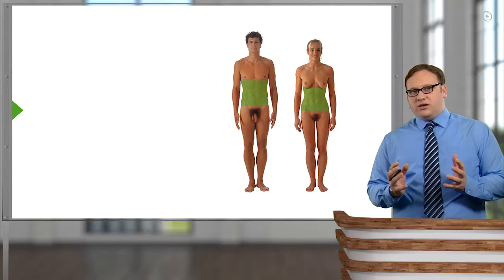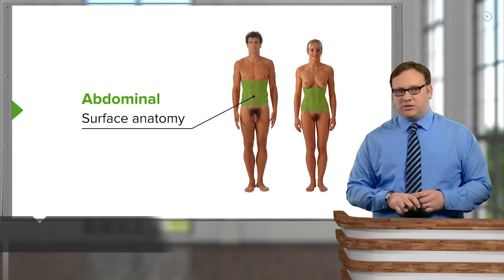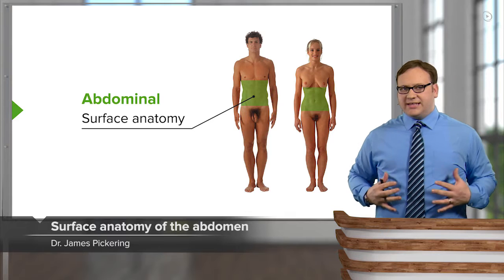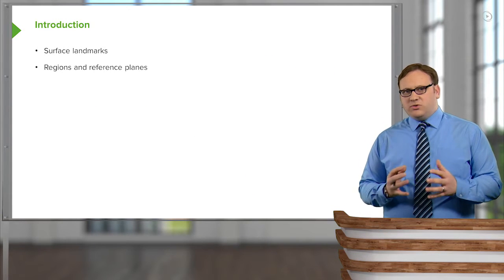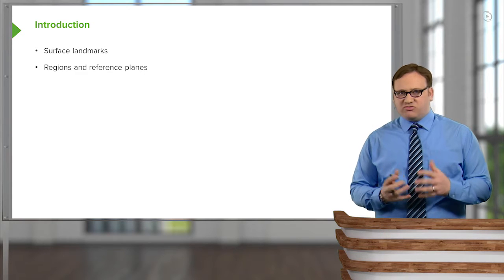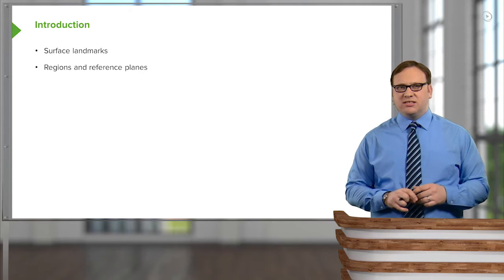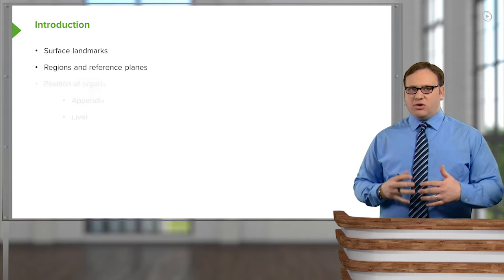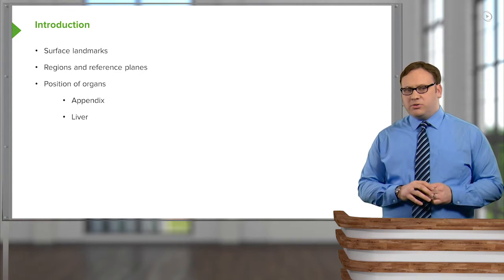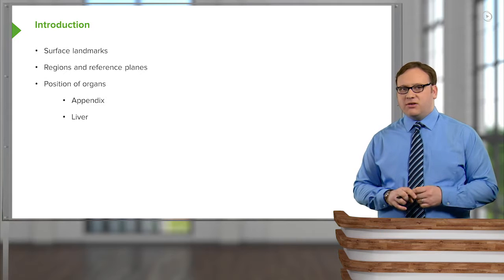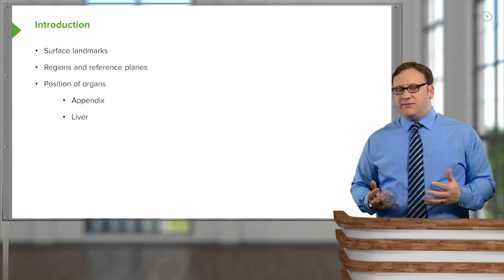In this lecture, we're going to look at the surface anatomy of the abdomen. We're going to look at various surface landmarks which we can observe on the anterior and lateral aspects of the abdomen. We're going to use these landmarks to create various reference planes and regions, and then using these regions, locate the position of organs within the abdomen — for example, where the appendix is located and where the liver is.